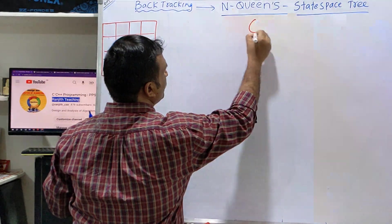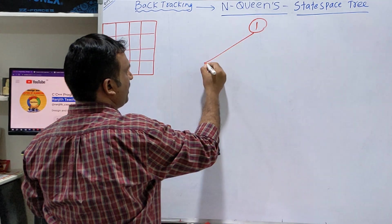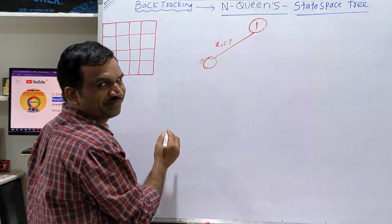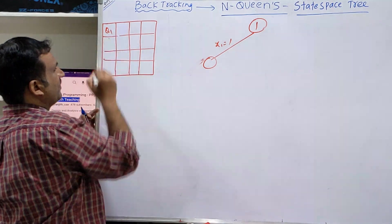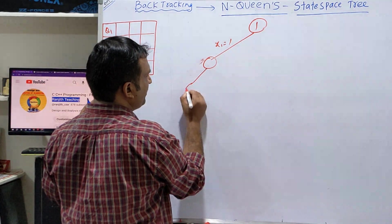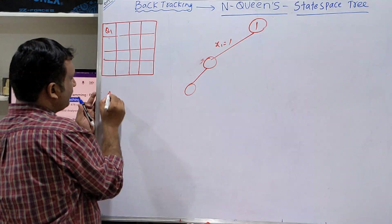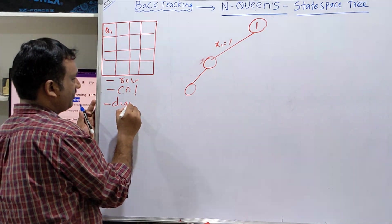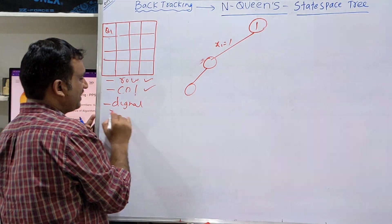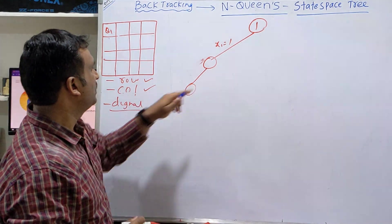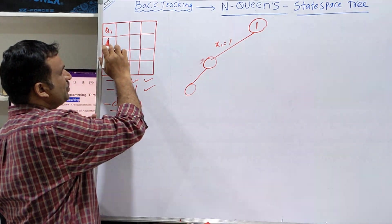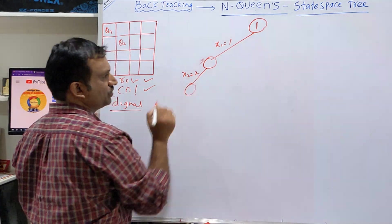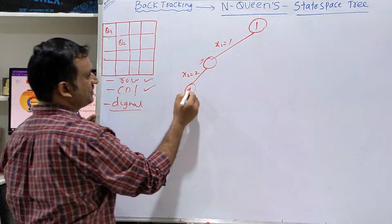The first node — assume that I am placing x1 equal to 1. That means queen 1 is placed. We will not place two queens in the same row, same column, and diagonal. Row and column we will consider, and diagonal we will backtrack. Can we place queen 2 here? No. Try to place it here — x2 equal to 2. But we cannot place it here. Backtrack.